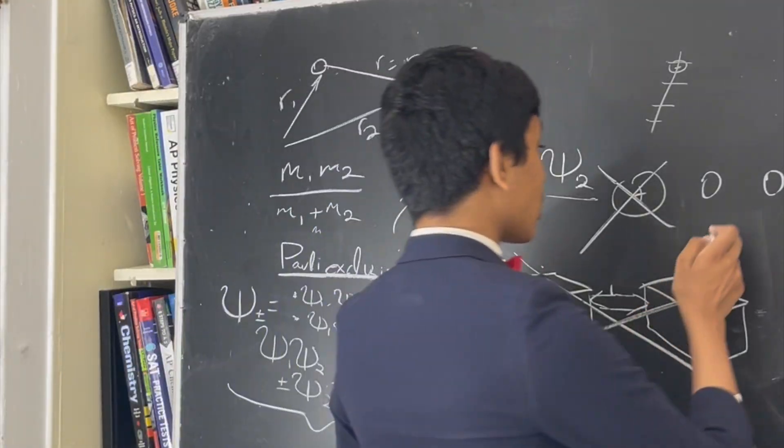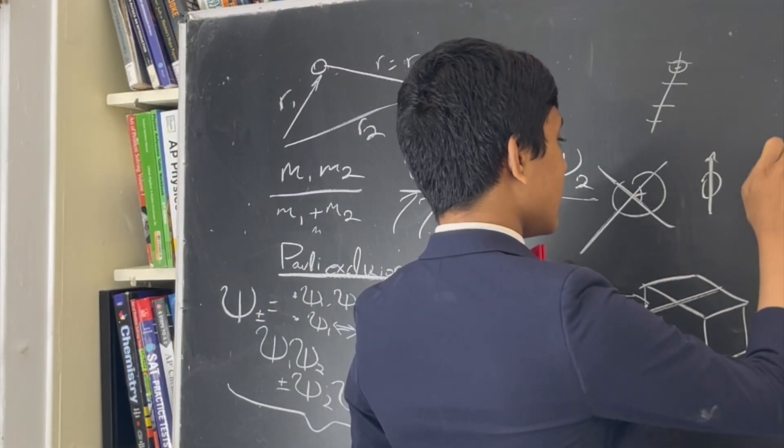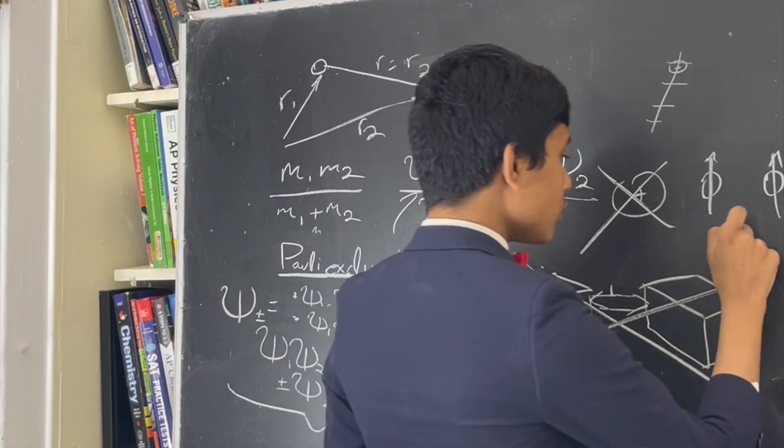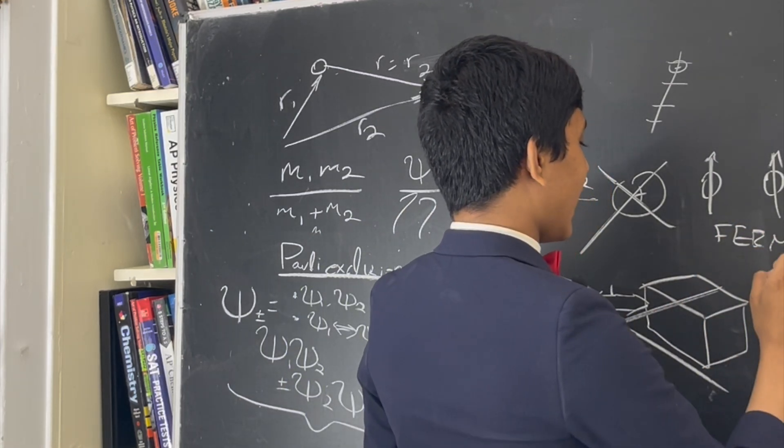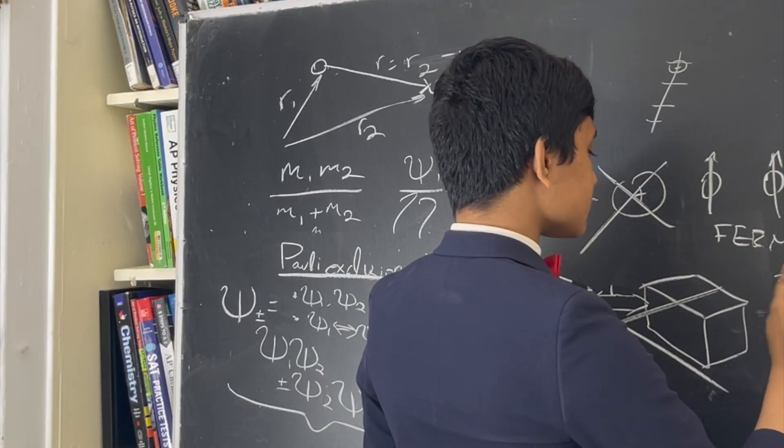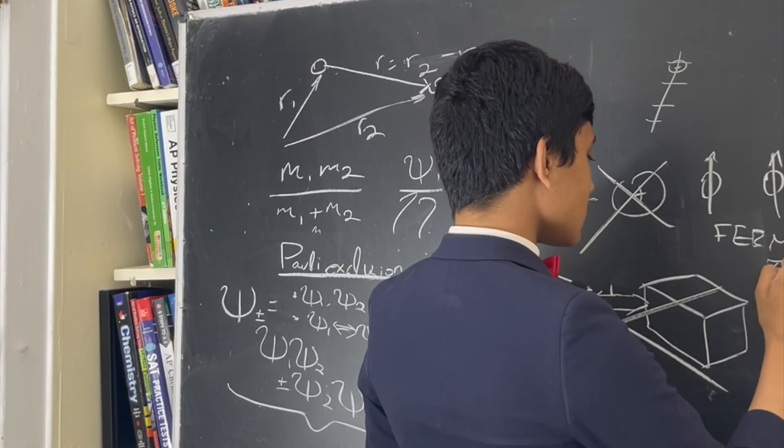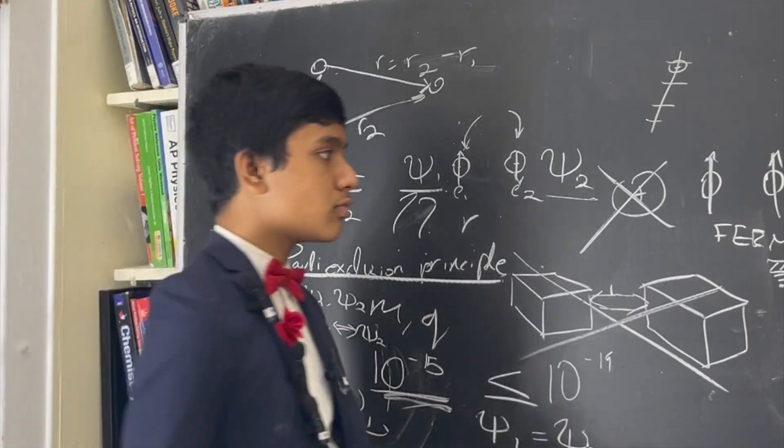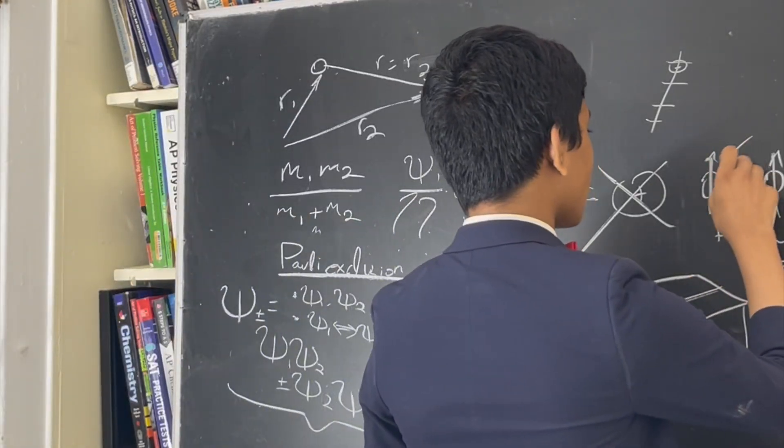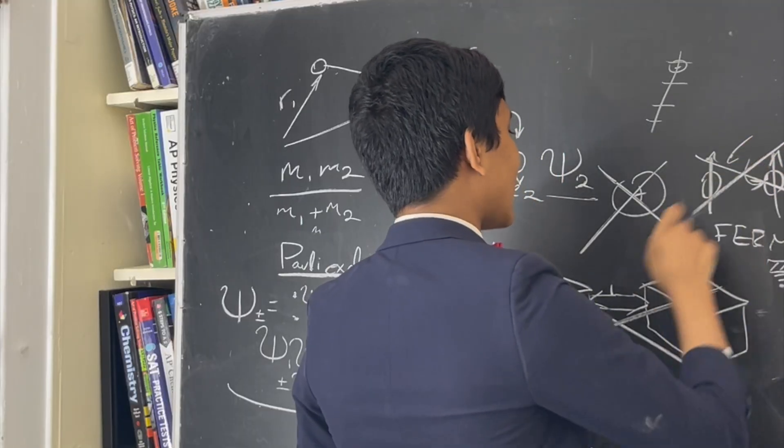Sorry, two identical particles, and not just any particles, fermions, which are particles with half integer spins, cannot exist with the same exact quantum state. That's not allowed.